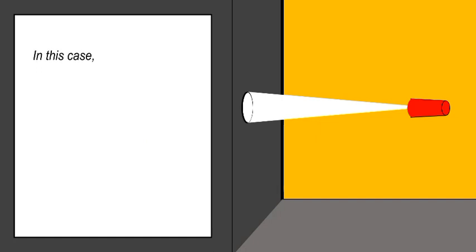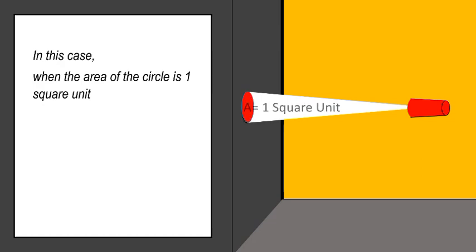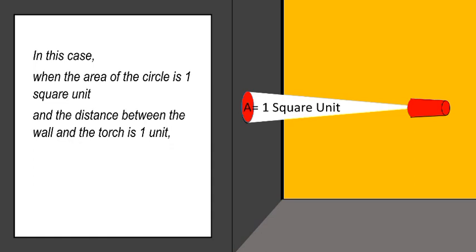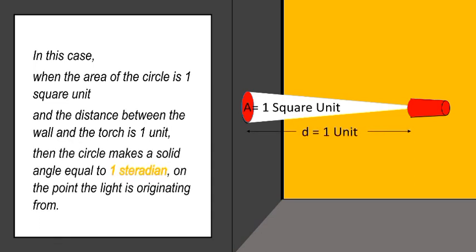In this case, when the area of the circle is 1 square unit, and the distance between the wall and the torch is 1 unit, then the circle makes a solid angle equal to 1 steradian on the point the light is originating from.